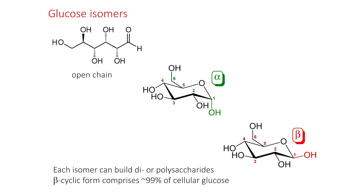The monomers of carbohydrates, or even the polymers, can exist in isomeric form. For example, these are the different forms of glucose. An isomer is just a slight rearrangement of the overall structure of the molecule. Glucose can be an open chain, or a cyclic molecule in alpha or beta form. Each of those different forms can be used to build polymers of carbohydrates.